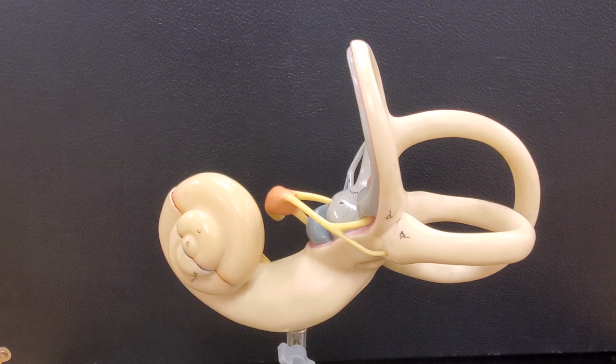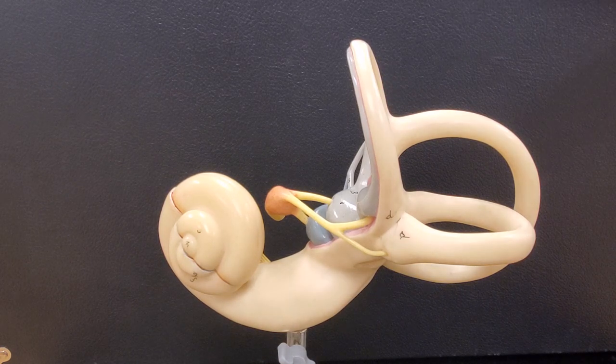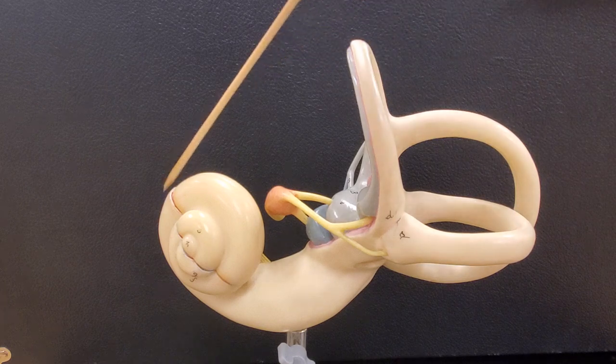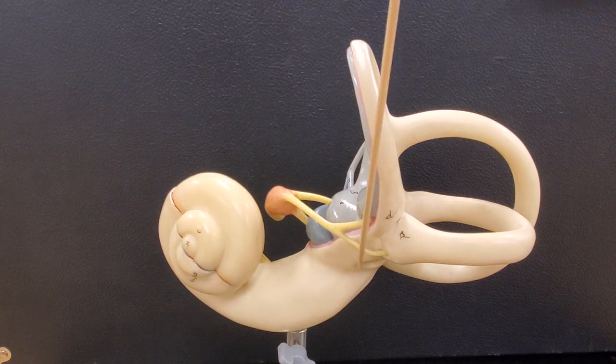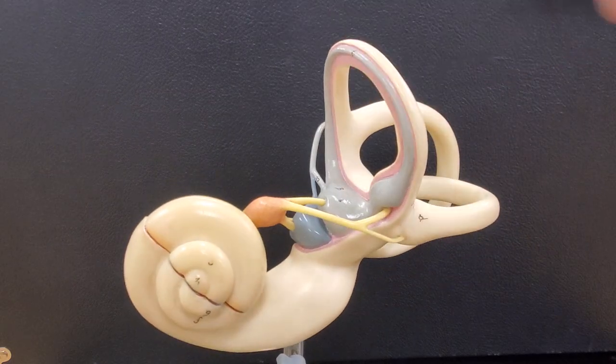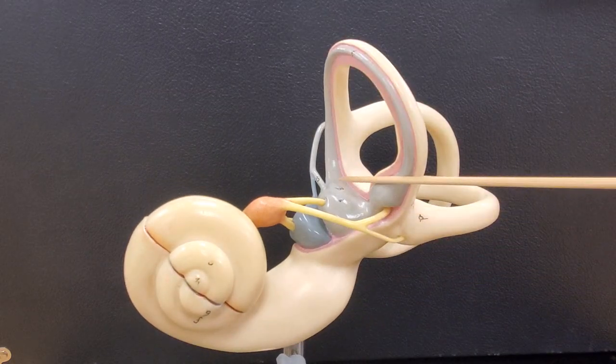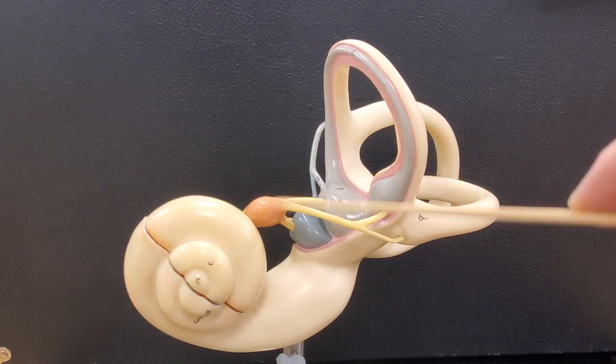Okay, so as we go over the inner ear, there's some structures that you should know. This area here is called the cochlea, looks like a snail shell. This middle section here, I'm going to tilt the model a little bit. This middle section here is called the vestibule.